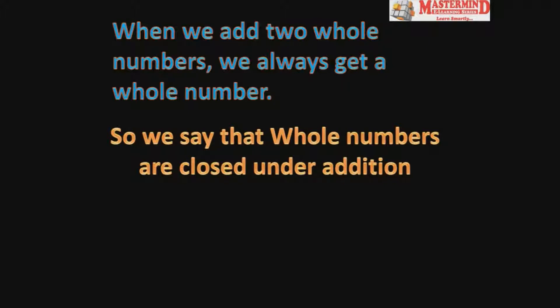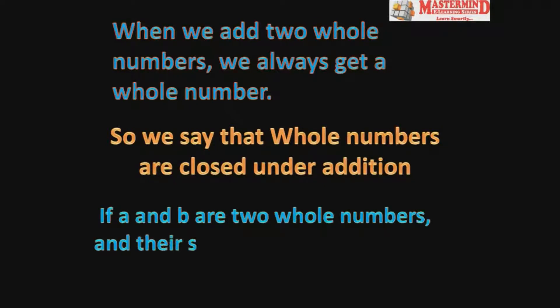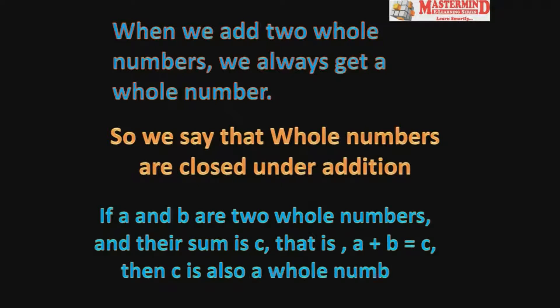Whole numbers are closed under addition. If a and b are two whole numbers and their sum is c, then c is also a whole number. The closure property states that the sum of two whole numbers is always a whole number.